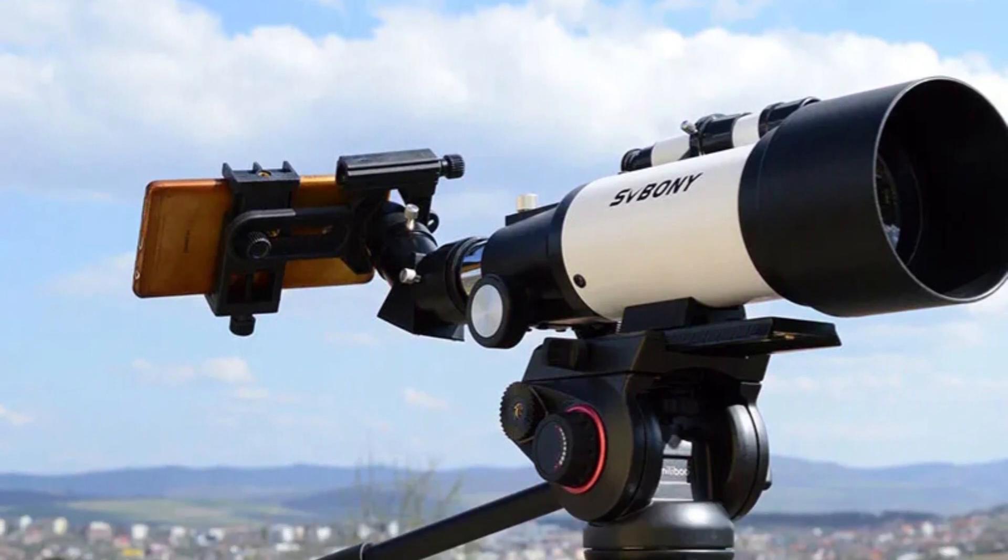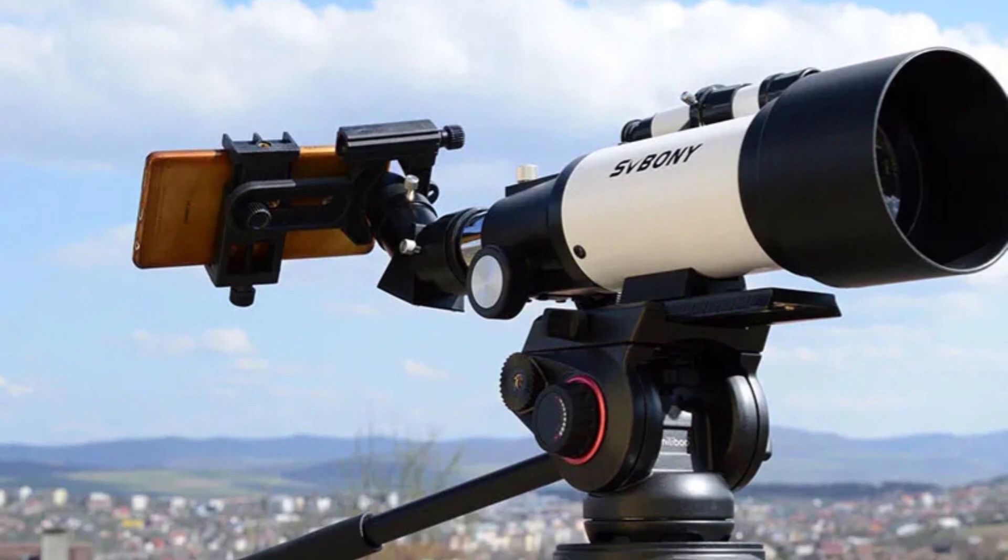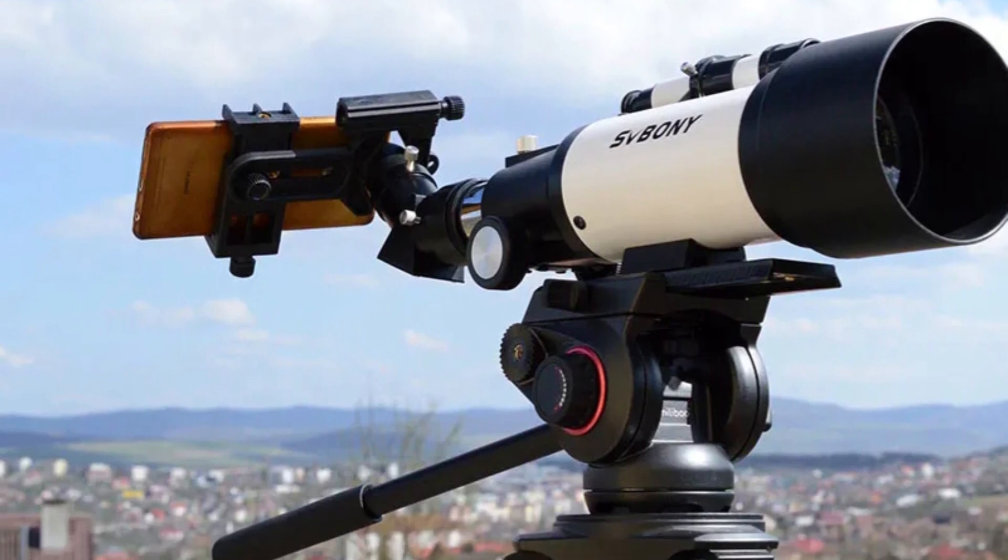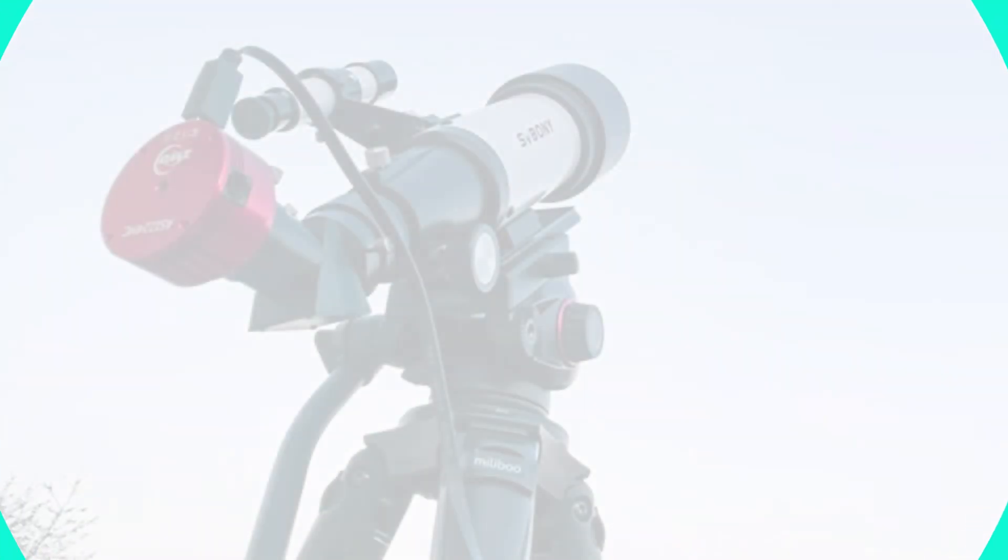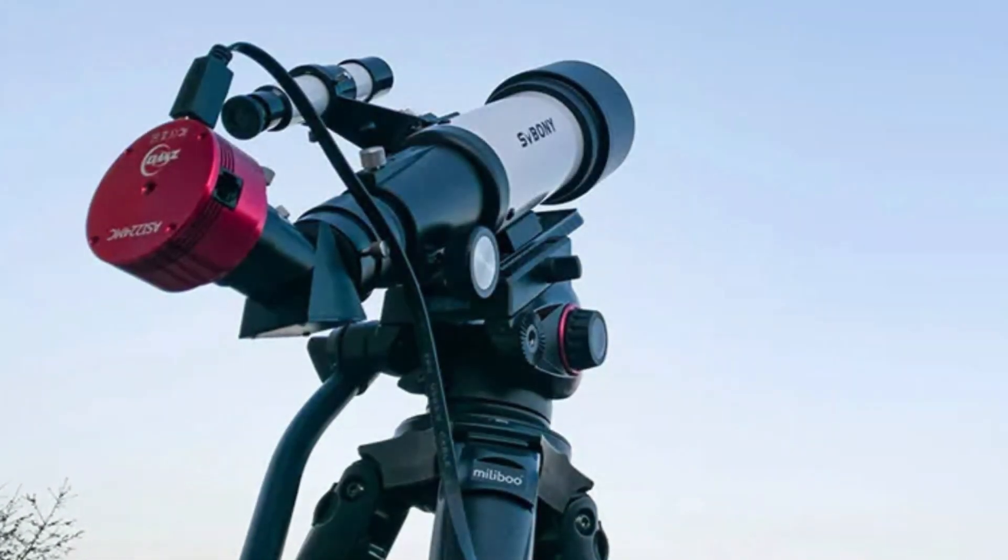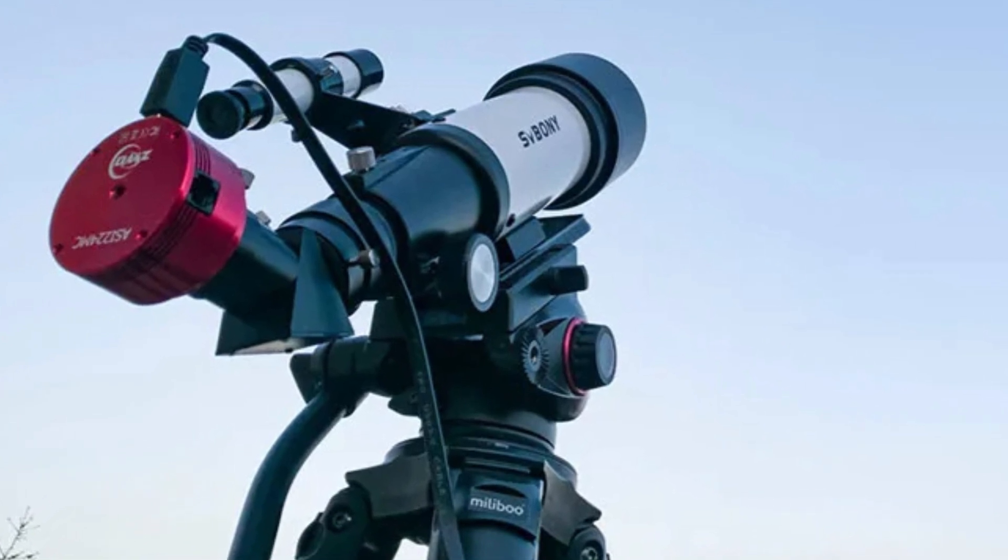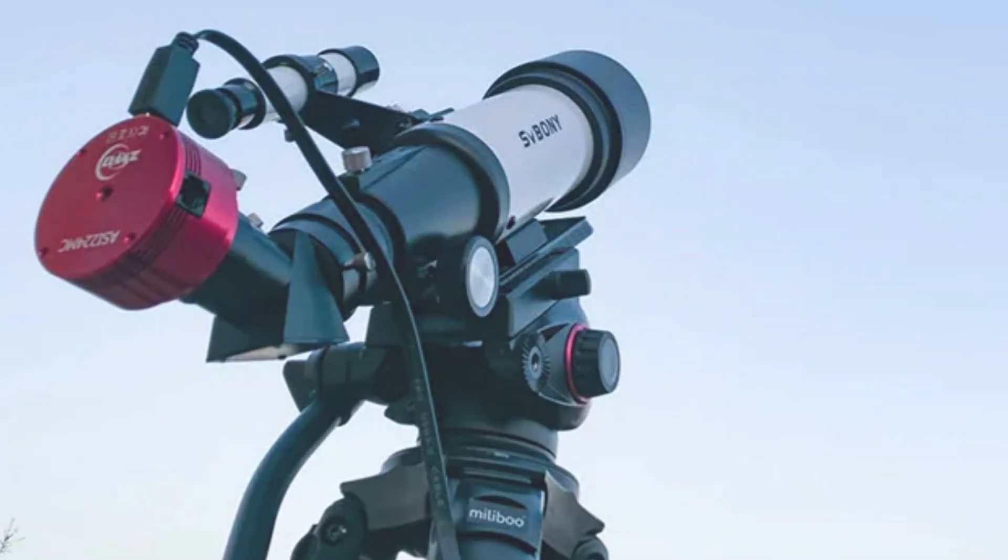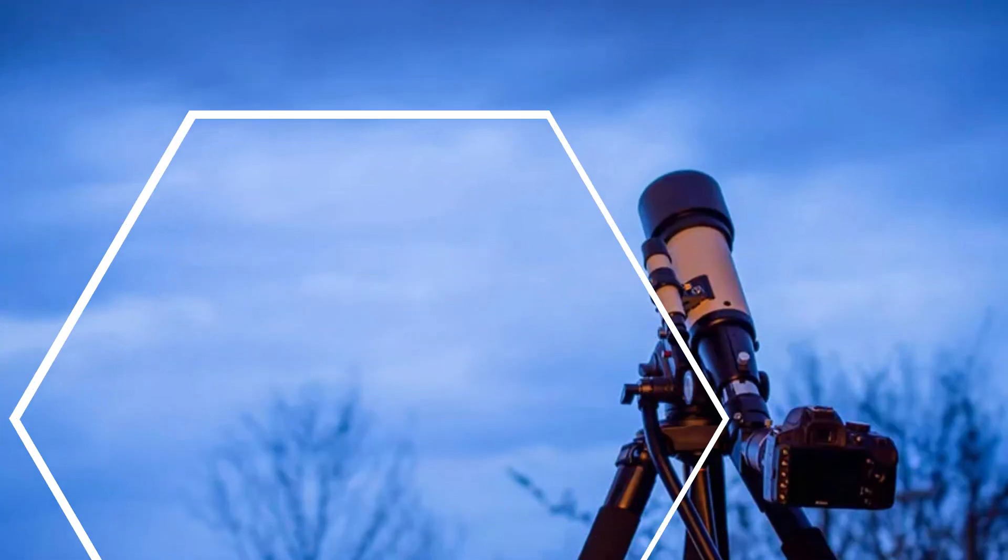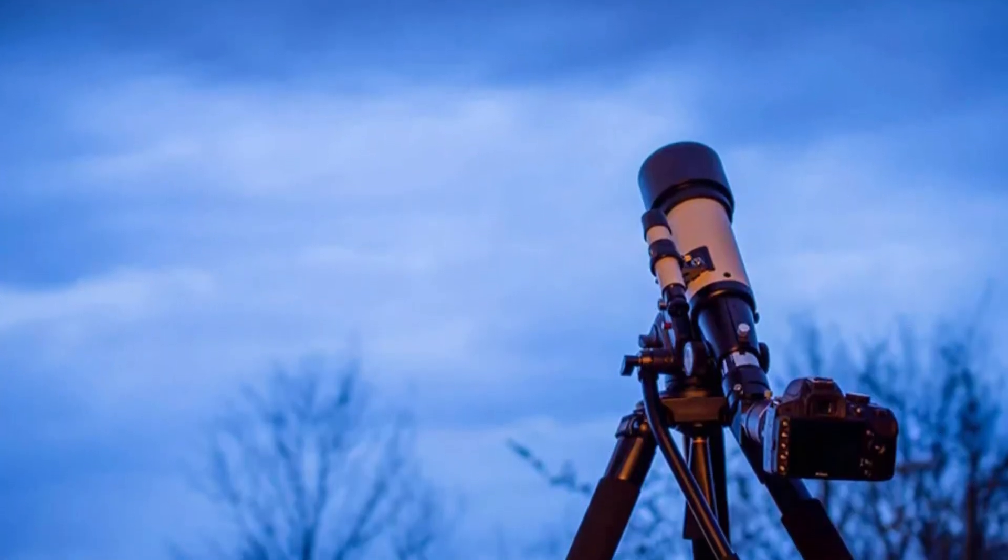The telescope has a wide 50-degree field of view and a 90-degree erecting prism diagonal, making it suitable for terrestrial observations. The SV-501 is portable with an aluminum alloy adjustable tripod, allowing for easy setup and adjustment. Additional accessories include a 5x20 optical viewfinder and a dust cover to protect the objective lens.